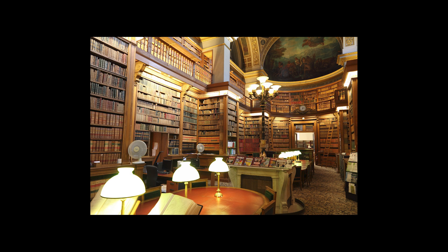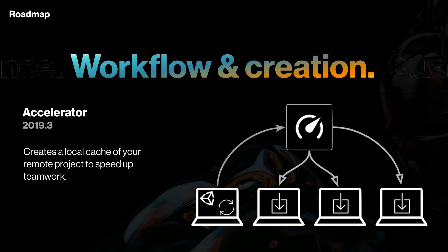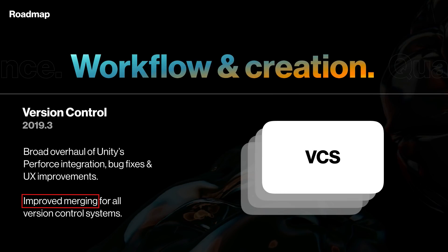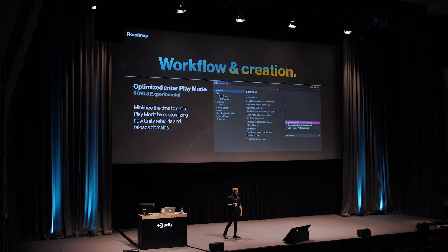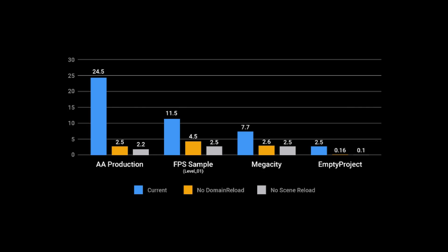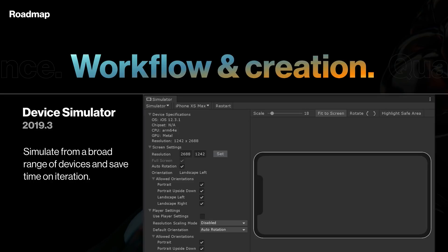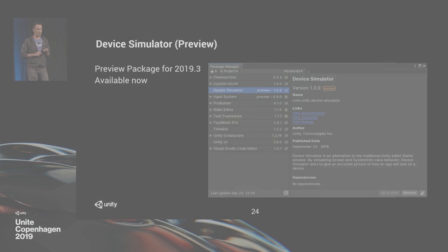Unity as a library allows you to embed Unity as its own library inside of native apps. The new accelerator speeds up working on remote projects. Version control is getting an overhaul, including improved merging, and you can now enter play mode faster by choosing how Unity handles script and scene changes. Because if you don't need to reload the entire scene, you can enter play mode so much faster. The device simulator allows you to simulate your game running on another device. This will not just resize the game to fit a certain screen format — it will actually trick the editor into thinking that the game is running on the device to help you test more in depth, such as if assets are loading correctly.